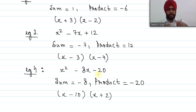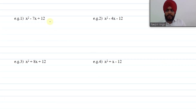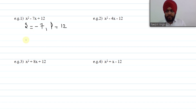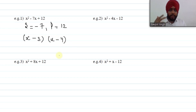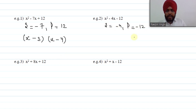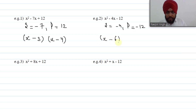Now we will try to do questions more quickly. For x² − 7x + 12: sum is −7, product is 12. Both factors are negative, so (x − 3)(x − 4). Next example: sum is −4, product is −12. Product is negative, sum is negative, so the big factor is negative and small factor is positive. Factors are 6 and 2, giving directly (x − 6)(x + 2).